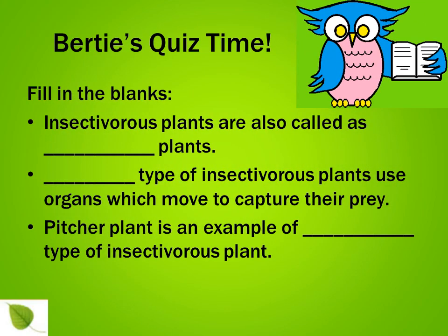Let's have a quiz. Fill in the blanks. Insectivorous plants are also called as dash plants. Dash type of insectivorous plants use organs which move to capture their prey. Pitcher plant is an example of dash type of insectivorous plant.